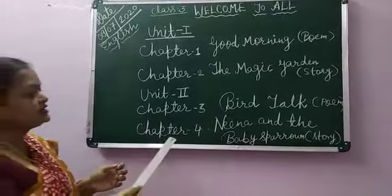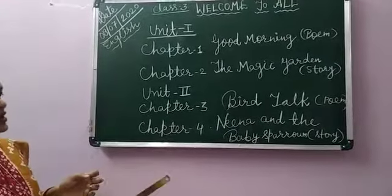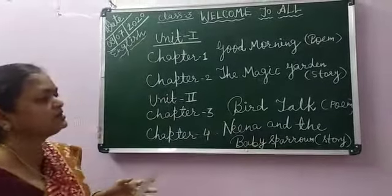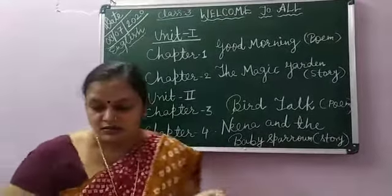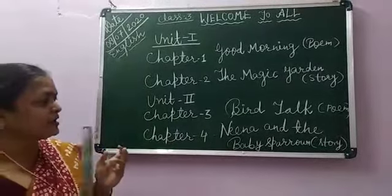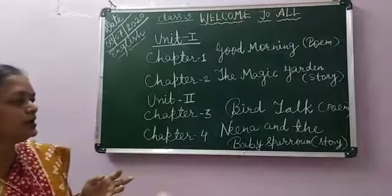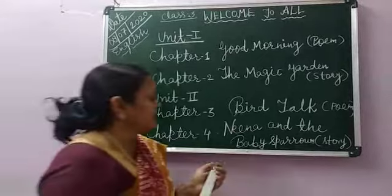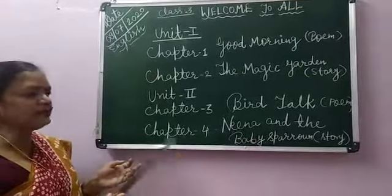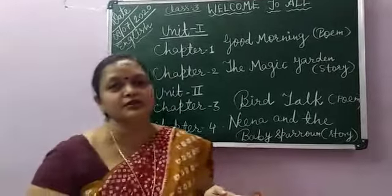Next, chapter 4. The chapter's name is Meena and the Baby Sparrows. It is about Meena and the two little baby sparrows. I will teach this chapter in my next video. Thank you.